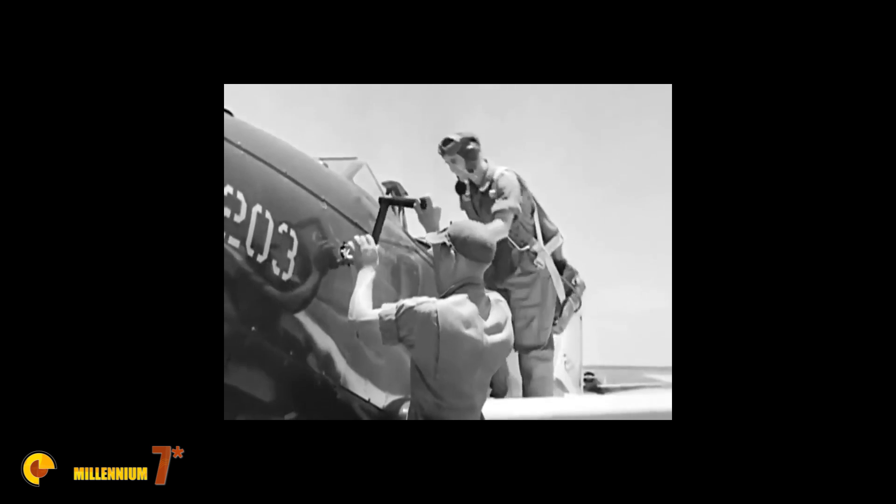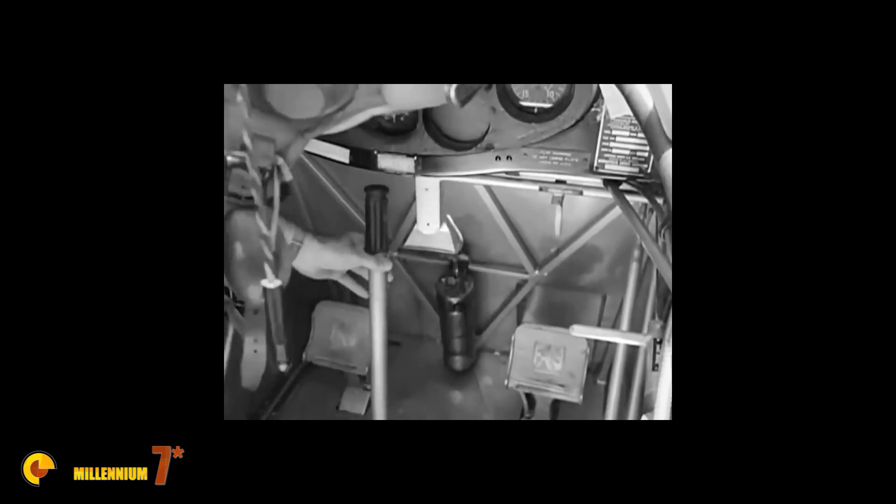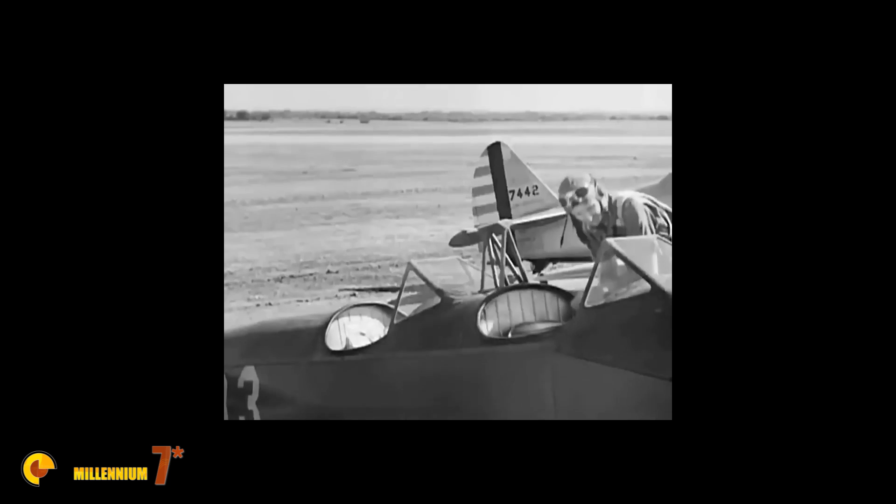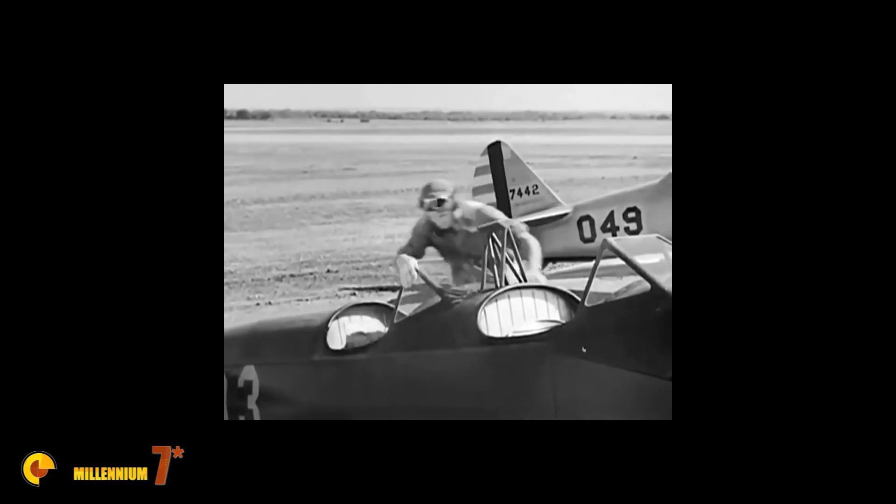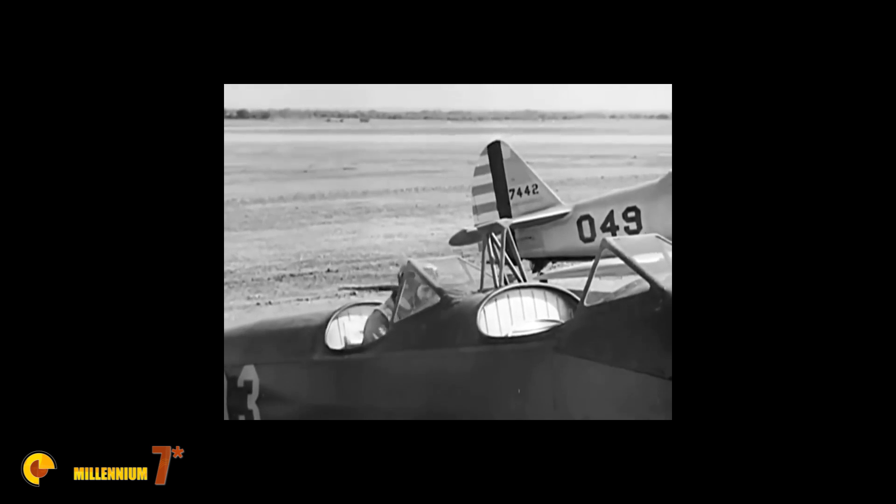Before taking off in a dual-control airplane, the pilot must fasten the safety belt in the other cockpit, release the controls, and check the airplane for loose objects which might cause trouble. Then he enters his own cockpit and checks that. He fastens the safety belt, making sure that it is secure and snug.